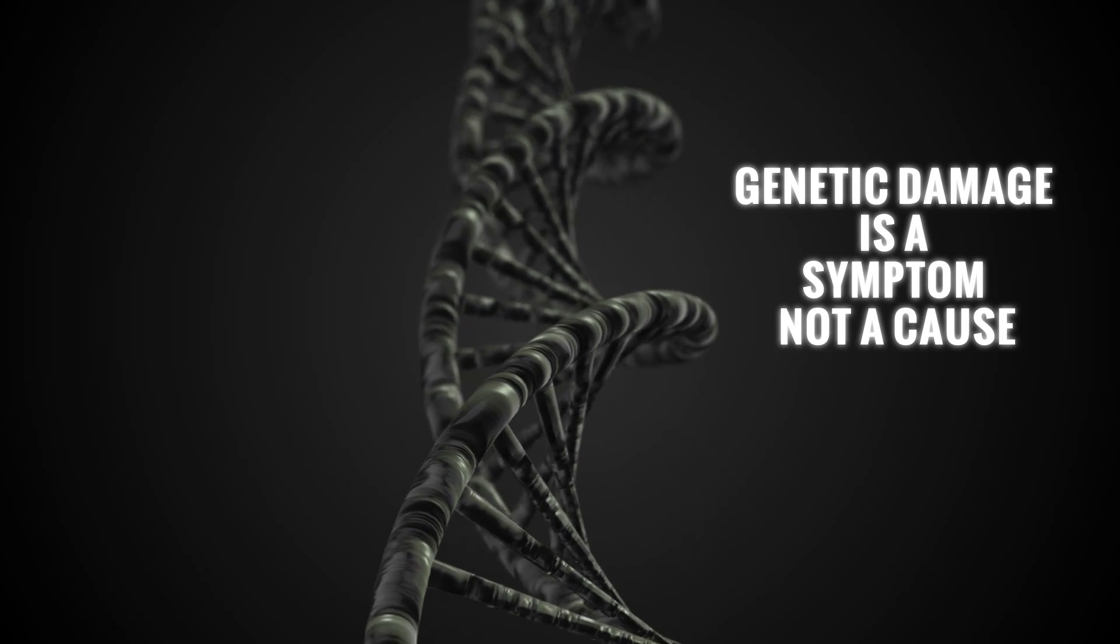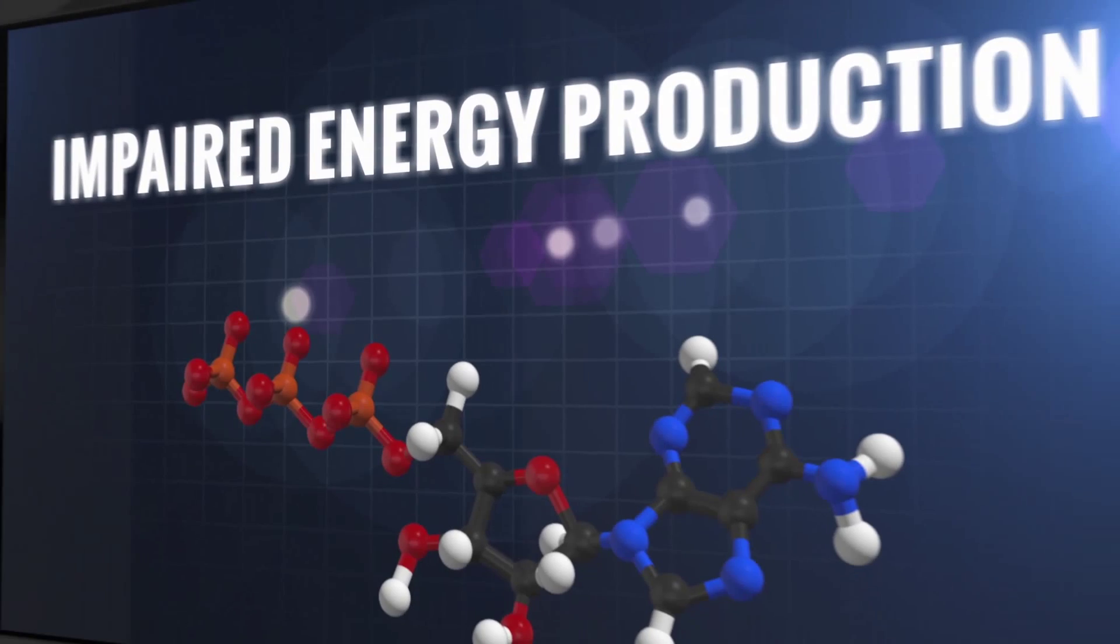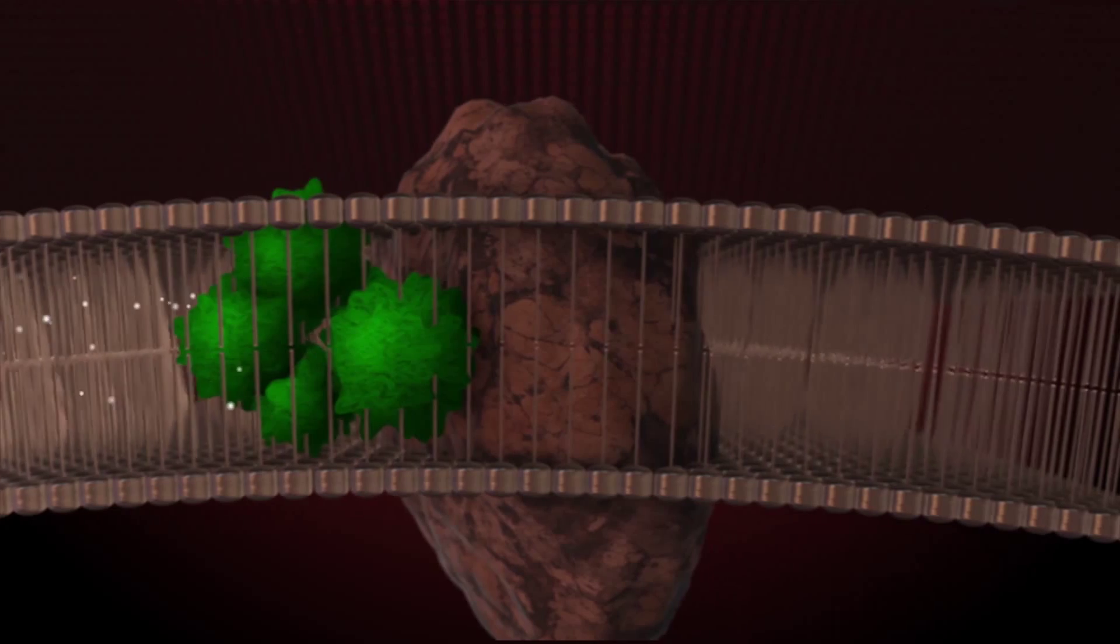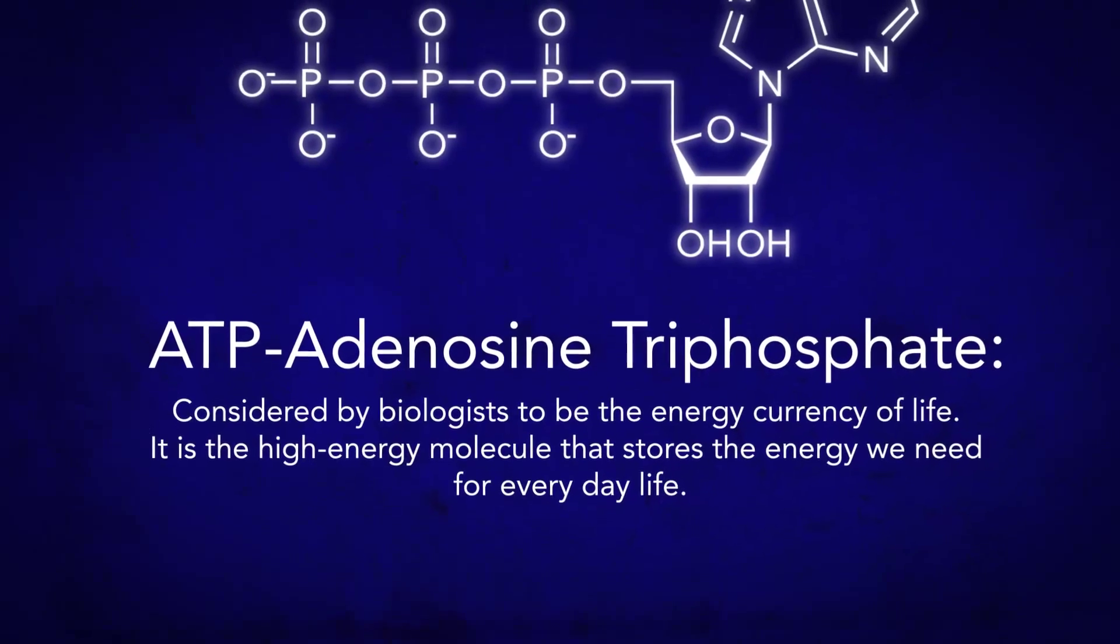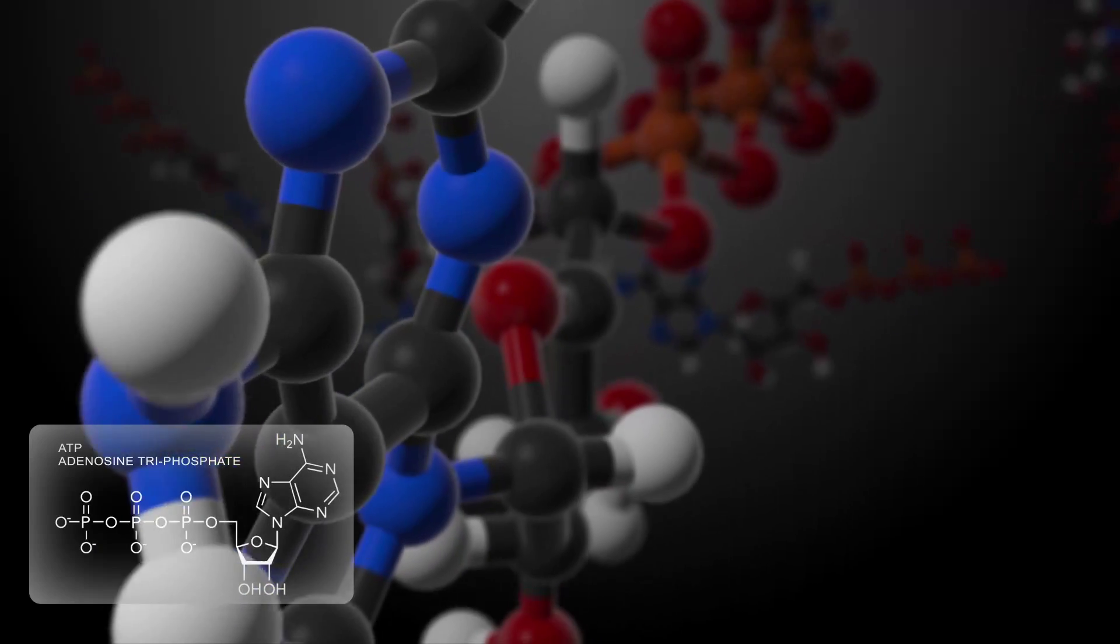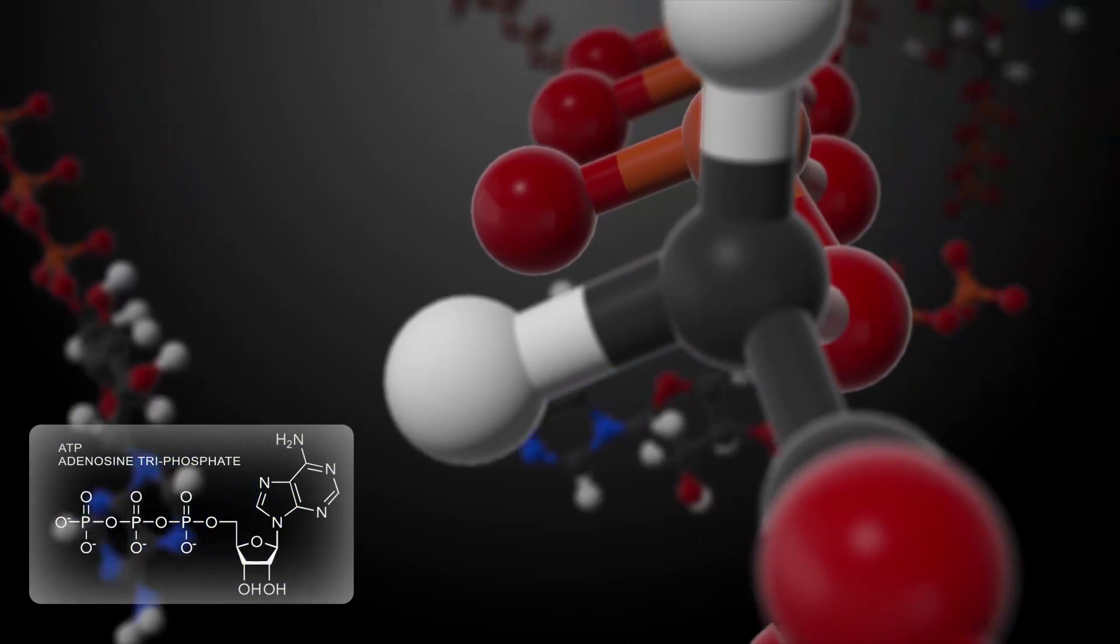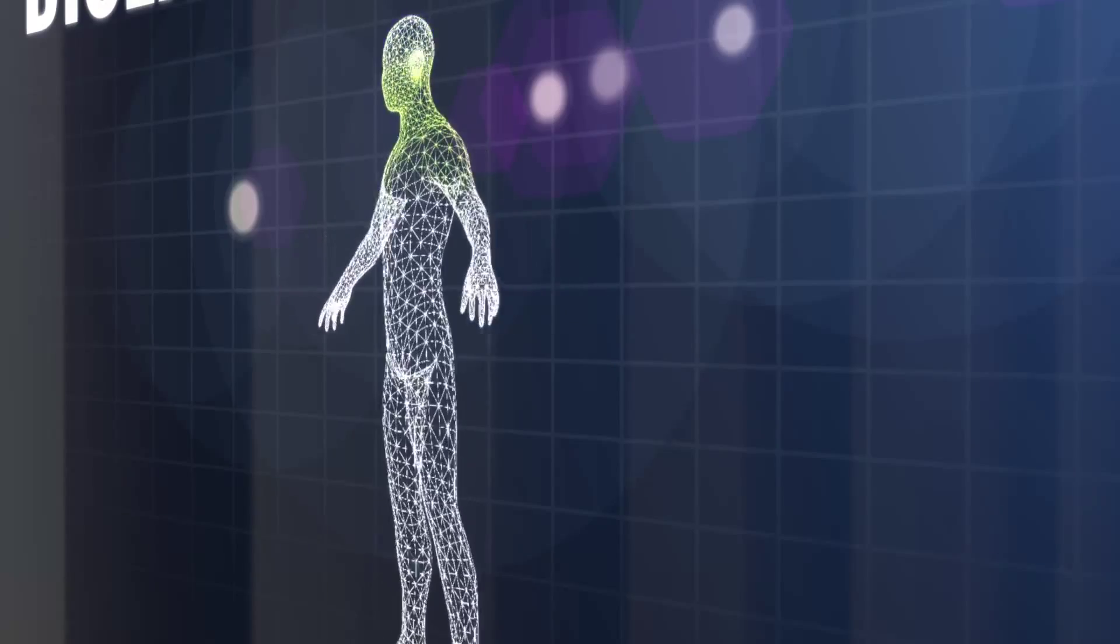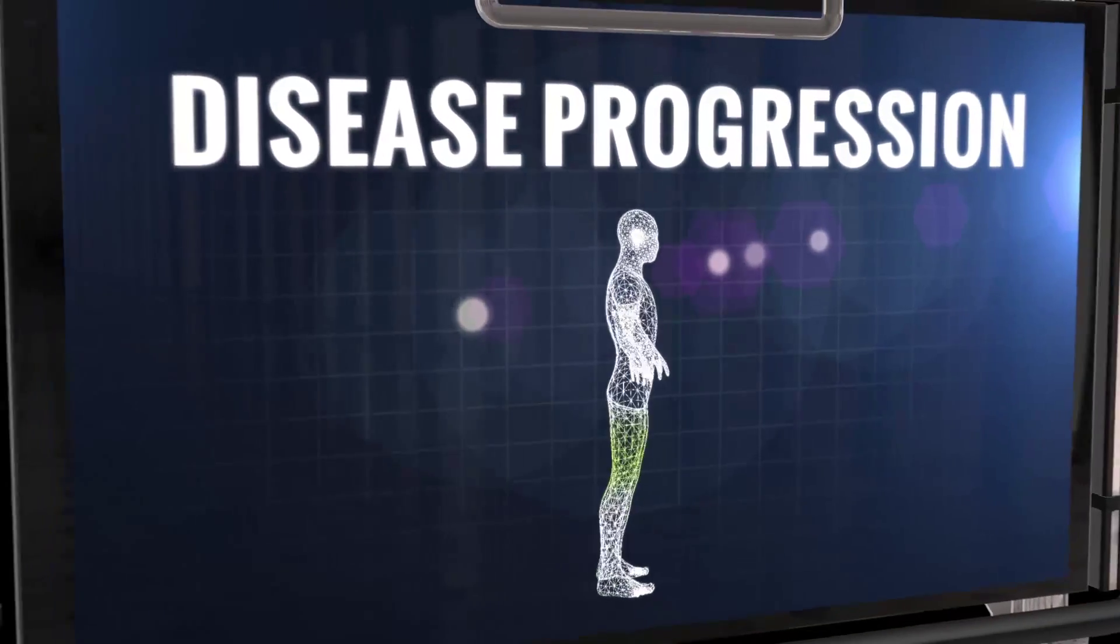The true root cause of disease stems from impaired energy production. When stealth pathogens block electron flow across the mitochondrial membrane, ATP production plummets to dangerously low levels. ATP is considered by biologists as the energy currency of life. In fact, all physiological mechanisms that require energy obtain it directly from stored ATP. Simply put, when ATP is in short supply, the body lacks the necessary energy to maintain healthy systems, leaving itself vulnerable to disease.